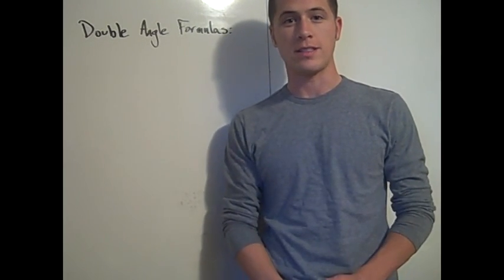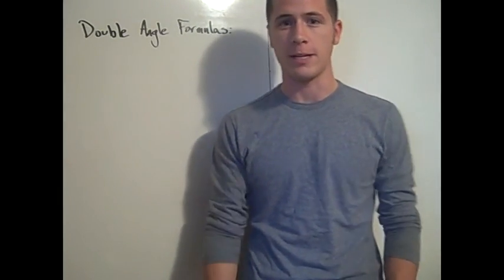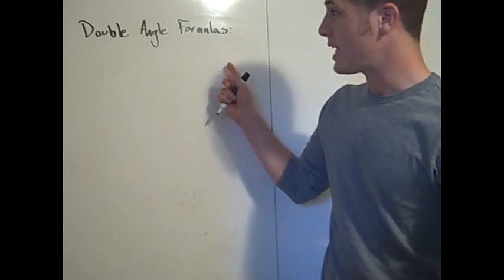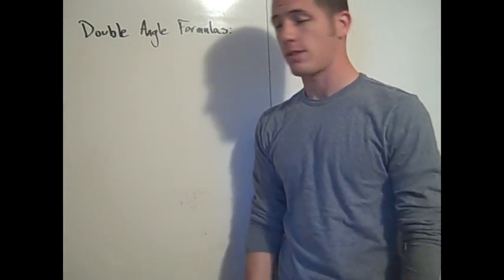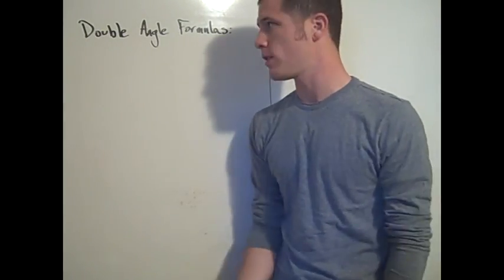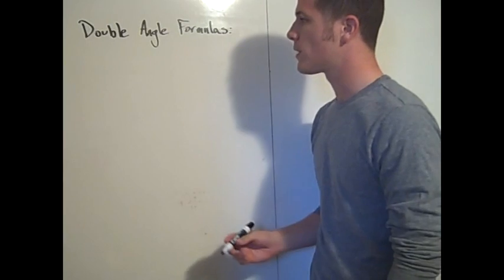Now that we know the sum formulas for sine and cosine, we can easily derive the double angle formulas and the half angle formulas. Let's start with the double angle formulas.